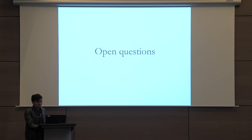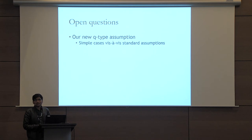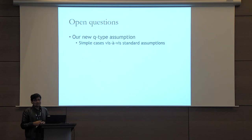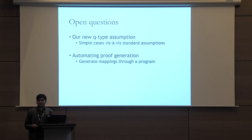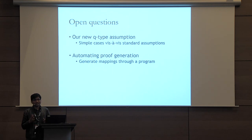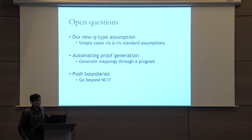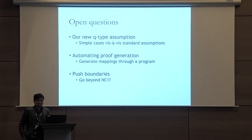To conclude, there are some open questions. The first is about our new Q-type assumption — in the paper we show that it follows from some known Q-type assumptions. The dimensions of this assumption depend on the matrices in the mapping; if the matrices are small, then a small value of Q would work. So it's interesting to explore how the simple cases of this assumption are related to standard assumptions. Next is the question about automating the proof generation process: if we want to build a secure encryption scheme, all we need to do is find a mapping satisfying certain equations, so such mappings could potentially be generated through a computer program. Finally, can we use this new framework to push the boundaries of what can be done from bilinear maps — in particular, can we go beyond NC1?